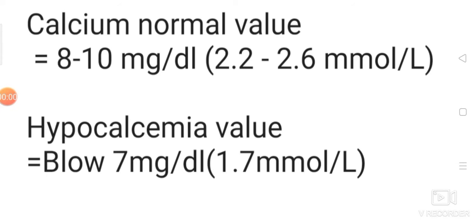Hypocalcemia. Normal calcium value is 8 to 10 mg per deciliter, or 2.2 to 2.6 mmol per liter. Hypocalcemia is indicated by a calcium value below 7 mg per deciliter, or 1.7 mmol per liter.